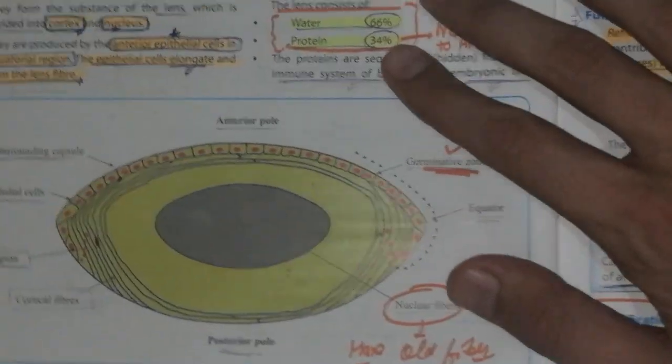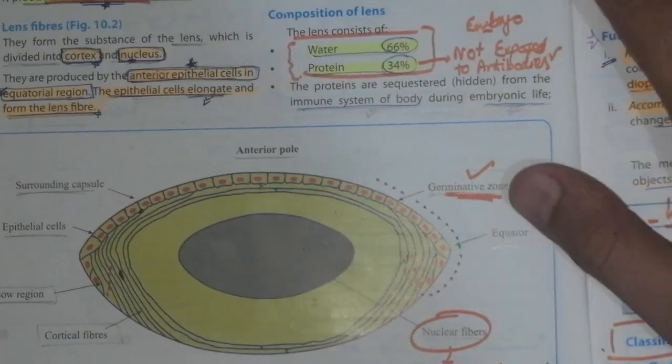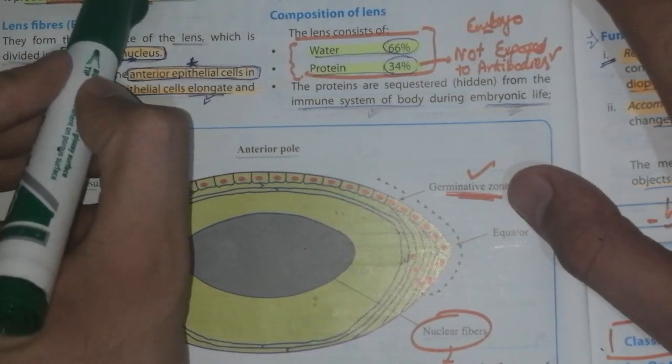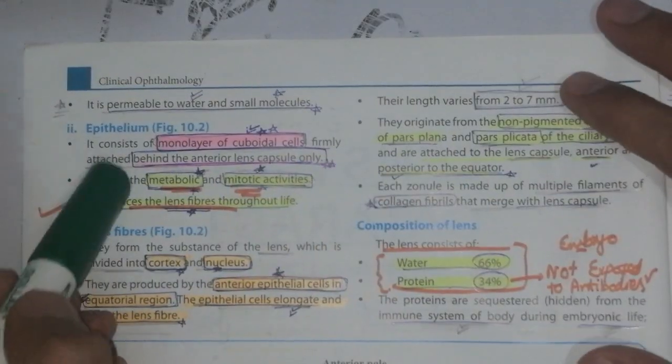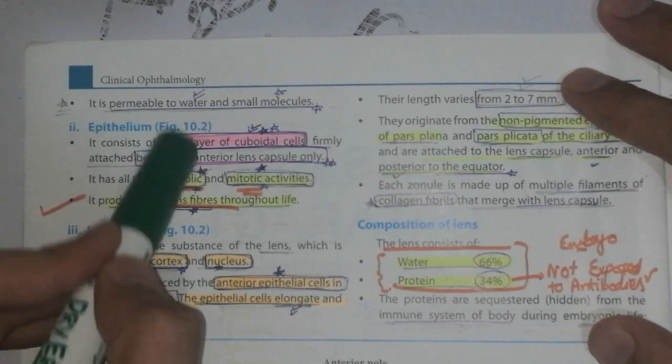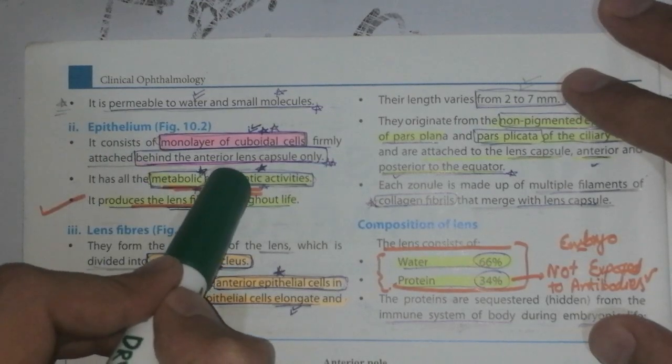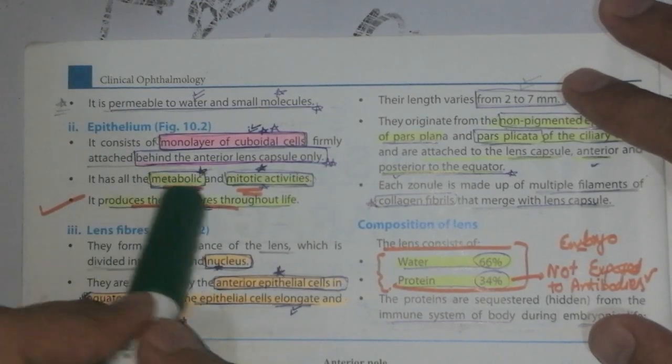Here you can see the epithelium. It consists of mononuclear cuboidal epithelium behind the anterior capsule only. It has all the metabolic and mitotic activities.